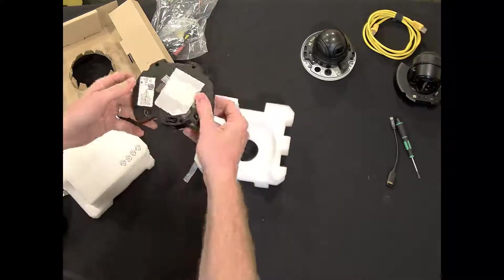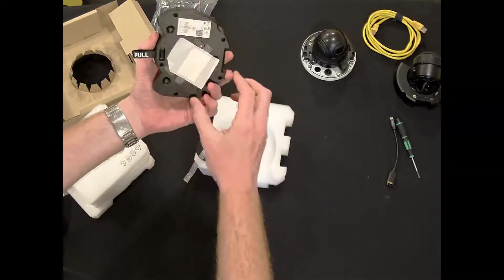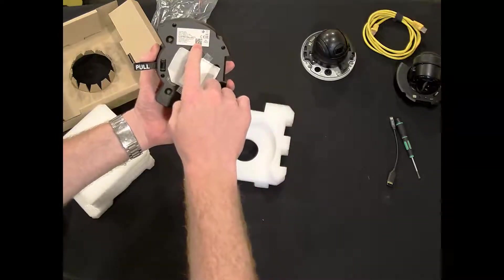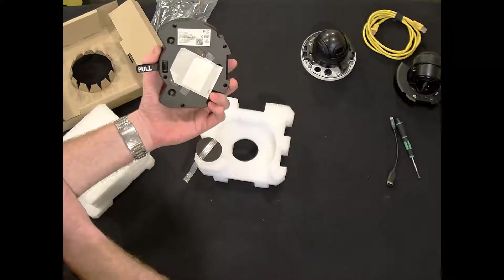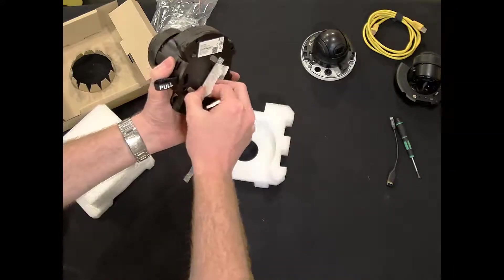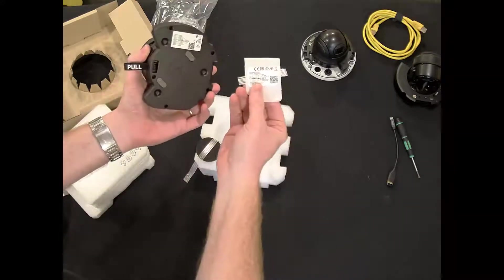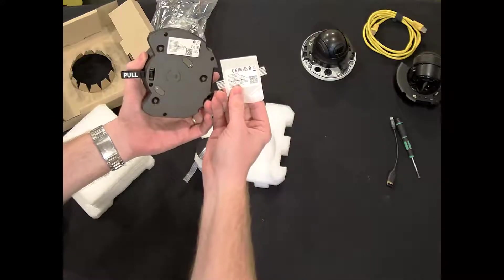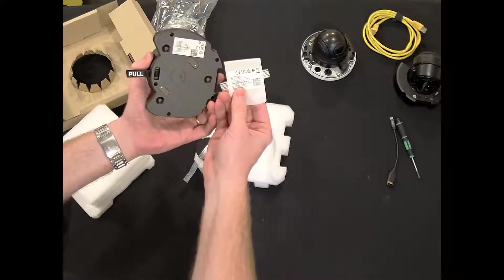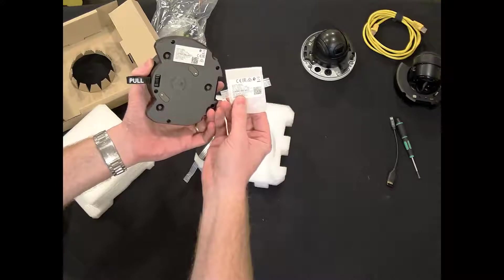On the bottom of the camera, we have a 2D QR code, MAC address, serial number. There also is a sticker with that information as well. So you're going to put that on your charts, your drawings, your spreadsheets, or just for your records.